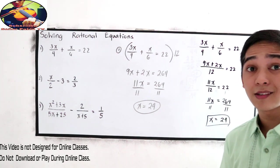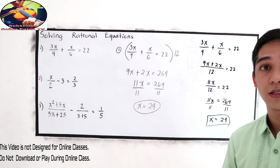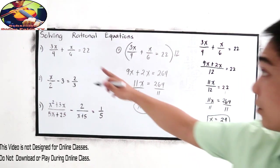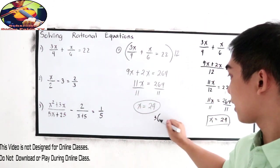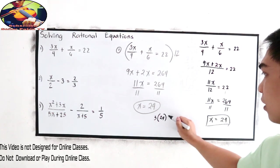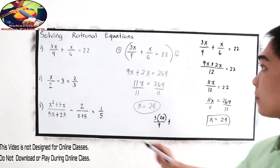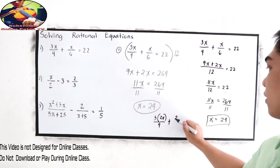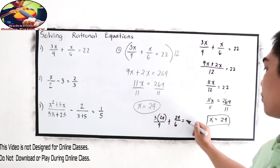And of course, you can check your answers by substituting the value of x. So 3 times, our x is 24, we substitute over 4 plus 24 over 6 is equal to 22.